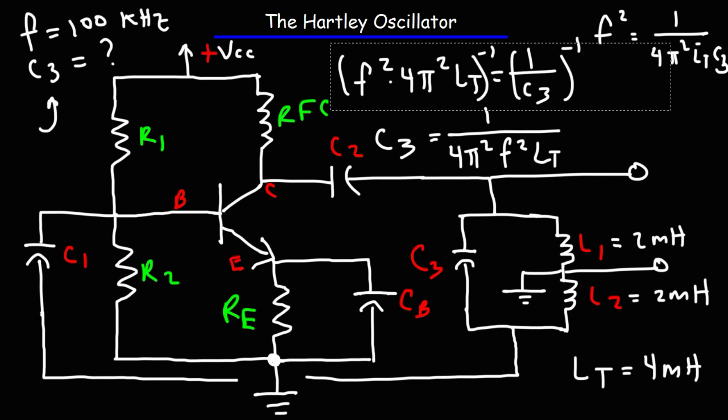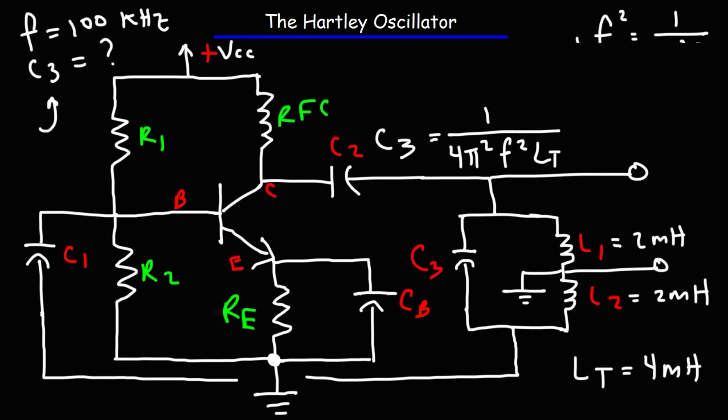So once you set your inductance value and you know the frequency that you want the circuit to operate, you could use that formula to calculate the desired value of C3.